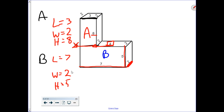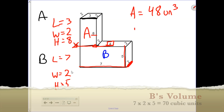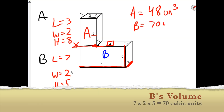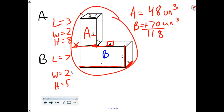Now it is time to find the volume of each individual prism. Length times width times height: A's volume is 48 cubic units. B's volume is 70 cubic units. Remember, volume is additive, so we just add these up. The entire figure has a volume of 118 cubic units.